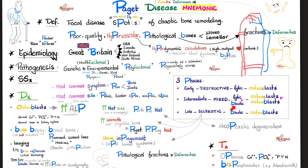In the late sclerotic phase, osteoblasts secrete large amounts of alkaline phosphatase, producing an isolated elevation of alkaline phosphatase. This means serum calcium, serum phosphate, and parathyroid hormone are all normal. To confirm the source is bone and not liver, both serum alkaline phosphatase and bone-specific alkaline phosphatase are elevated.